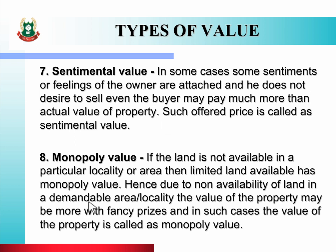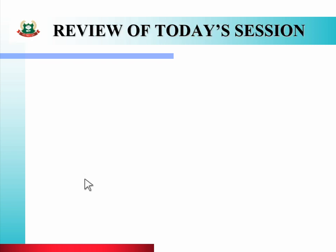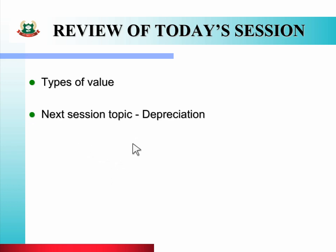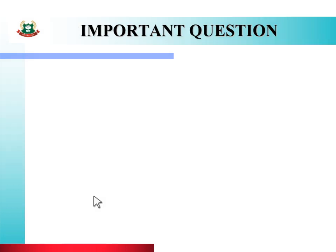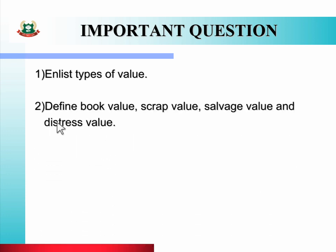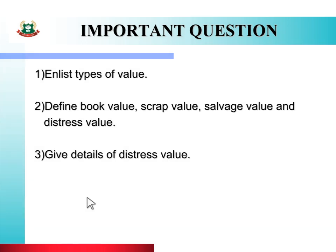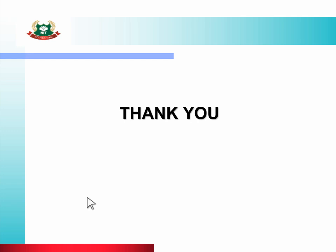So these are the various types of value. In today's session, we studied about types of value. Hope you understood the portion explained here. In the next session, we will see the topic depreciation. Important questions on today's topic are: enumerate types of value; define book value, scrap value, salvage value, and distress value; and give details of distress value. You have to solve these questions as an assignment. If you face any difficulty, watch the video again, refer to the notes provided, or contact me. Thank you for watching the video.